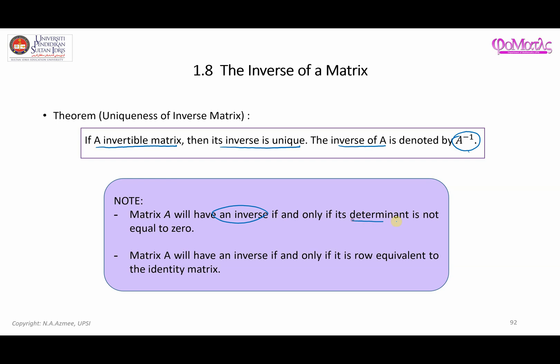Matrix A will have an inverse if and only if its determinant is not zero. Also, matrix A will have an inverse if and only if it is row equivalent to the identity matrix — meaning if you perform elementary row operations and are able to reduce it to the identity matrix, that indicates the matrix has an inverse.